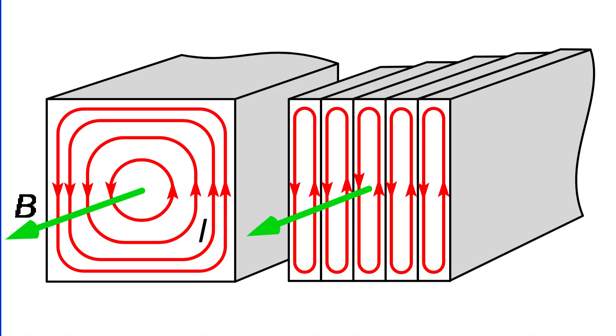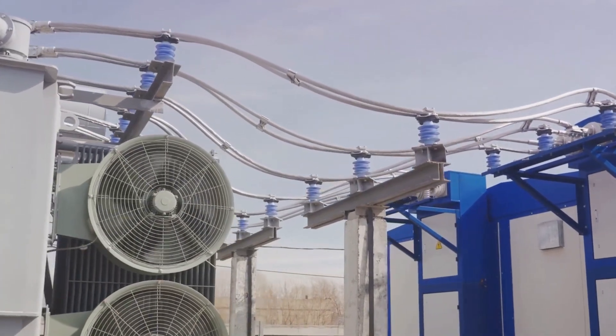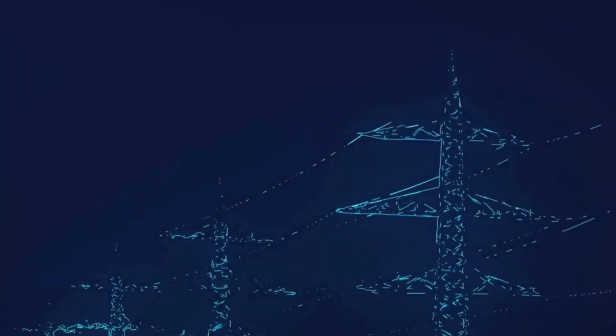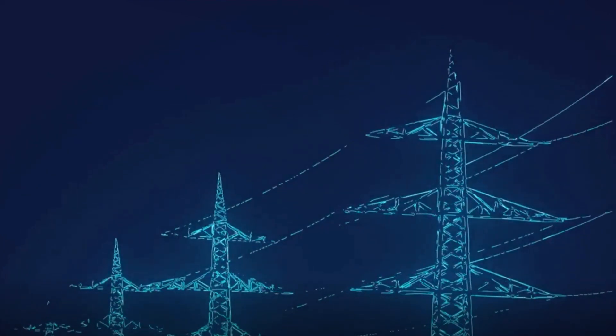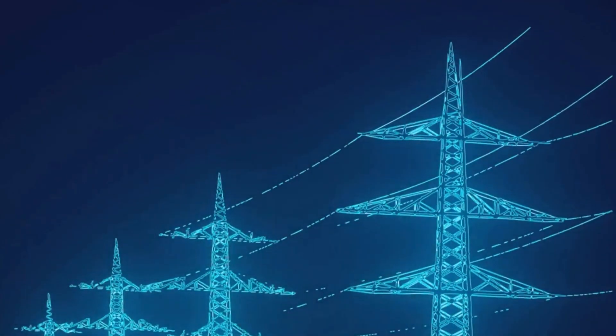By laminating the transformer core, we can reduce these eddy currents, thereby minimizing energy losses and making the transformer more efficient. And that's why the transformer core is laminated. To minimize energy losses and ensure effective transfer of electrical energy.